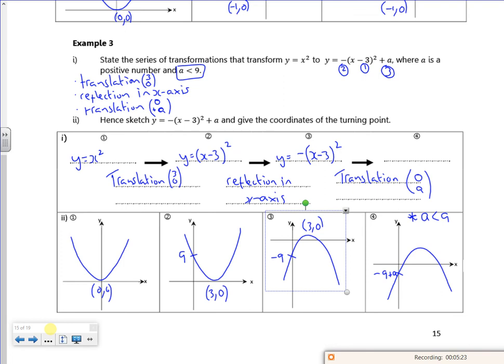So it's quite important now that A is less than 9, to keep the crossing point on the y axis below the x axis. And then that'll be 3 comma A, shifted up by A. Whereas before it's 3 comma 0. Awesome.